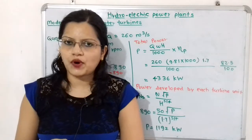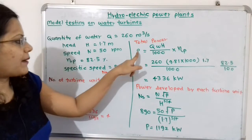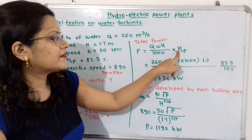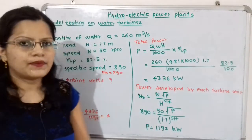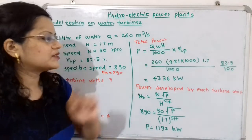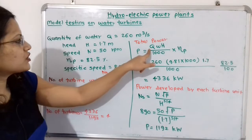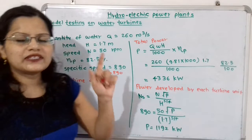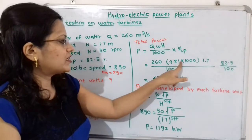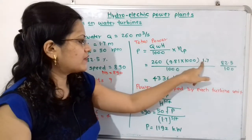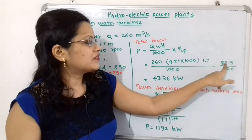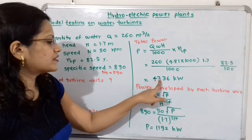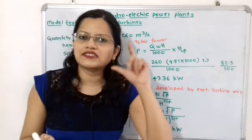To calculate the total power, the formula is P = Q × W × H / 1000 × efficiency of the prototype. Here Q is 260, W (water density) is 9810 N/m³, H is 1.7 meters, divided by 1000, multiplied by efficiency 82.5 divided by 100. This gives a total power equal to 4336 kilowatts.